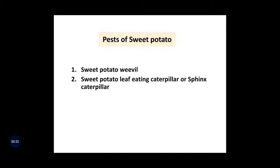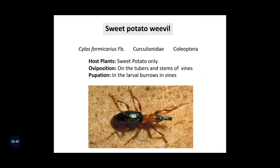These are the pests of sweet potato. The first one is sweet potato weevil, and the second one is sweet potato leaf eating caterpillar, also called spinax caterpillar. The first and major pest of sweet potato is the sweet potato weevil. The scientific name of this pest is Cylas formicarius, and it belongs to family Curculionidae and order Coleoptera.